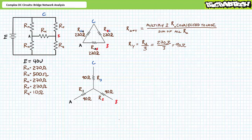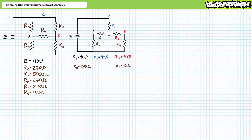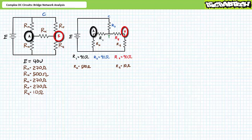We can swap out the new Y configuration for the previous delta, and the bridge circuit is none the wiser to the substitution. Substituting the balanced Y configuration at nodes A, B, and C results in a purely series-parallel circuit. We've gained access to an additional central node Y, but we've lost access to RX, the bridge resistor of interest. However, if we solve for the nodal voltages at A and B, we can in effect solve for the voltage differential across bridge resistor RX.